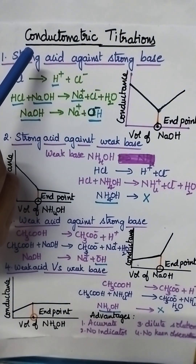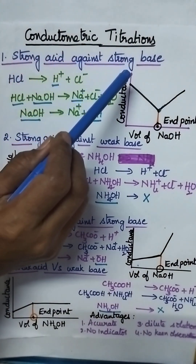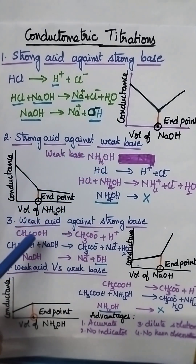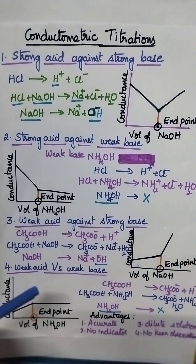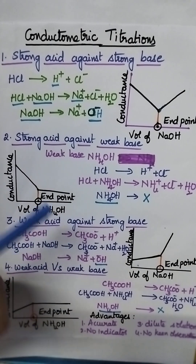They can be classified into 4 types: strong acid against strong base, strong acid against weak base, weak acid against strong base, and weak acid against weak base.